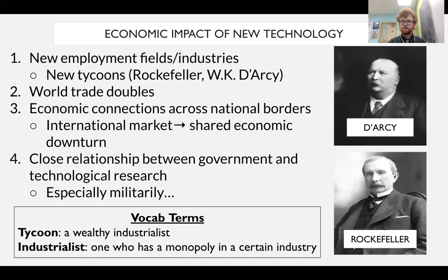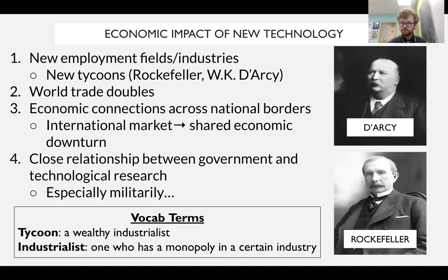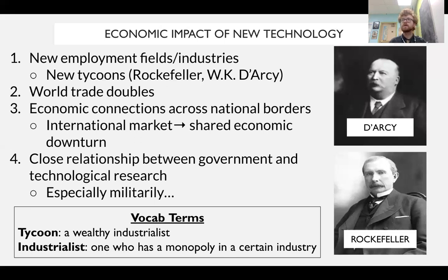The downside, however, is that when there's an economic downturn somewhere — say in the United States — this will have an adverse impact on the rest of the world. We will start to see international depressions. We'll see 1893, there will be a panic; in 1906, there will be a depression; in 1929, there will be a great depression. We are seeing an international market with shared economic risks.